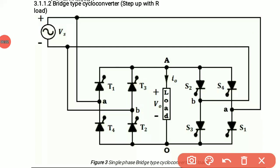Today we will discuss the bridge type step-up cycloconverter. In our previous class we discussed the midpoint step-up cycloconverter. In this cycloconverter we are using a total of eight thyristors: four thyristors belong to one set and another four belong to another set. That is thyristors T1, T2, T3, T4 belong to one set and thyristors S1, S2, S3, S4 belong to another set.